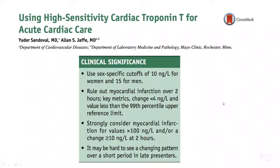Another review article shows that with most troponin assays, the cutoff is around 10 for women and 15 for men. A change of less than four is considered not significant, but anything more than four within an hour is considered significant. Strongly consider MI if the troponin from the start is more than 100, or if there is a change of more than 10 over two hours apart.